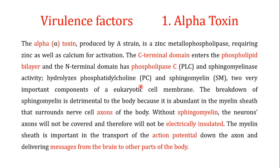The most important virulence factor of Clostridium perfringens is the alpha toxin. This alpha toxin is produced by a specific strain known as Strain A. The alpha toxin is a zinc metallophospholipase and requires both zinc and calcium for its activation. It is called 'metallo' because it requires zinc, and 'phospholipase' because it is responsible for the degradation of certain phospholipids.